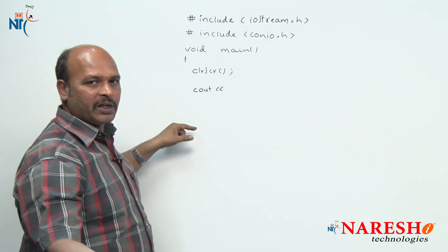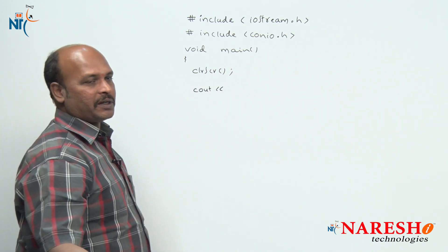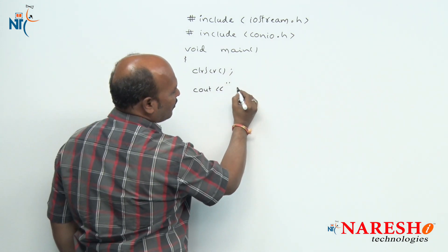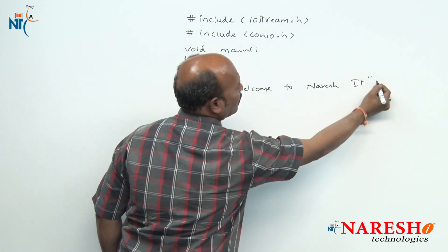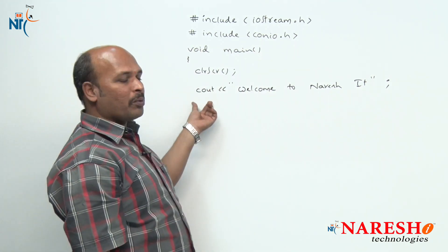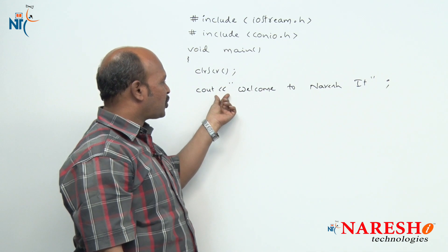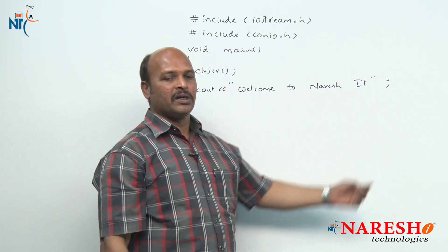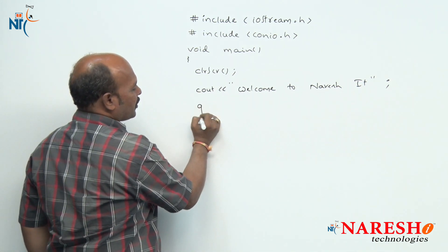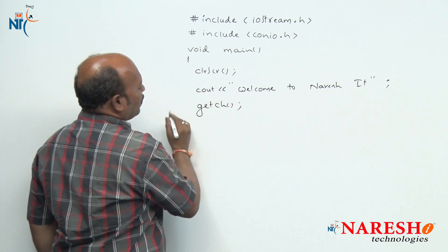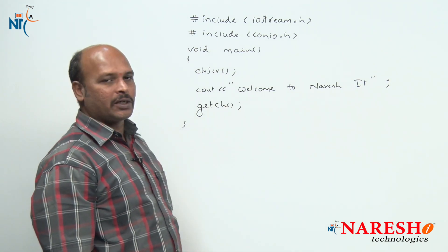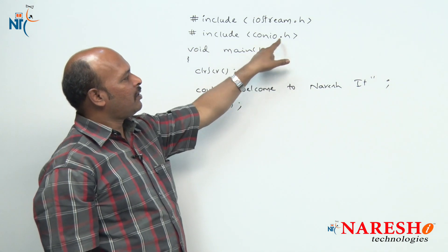Cout is the object name and '<<' is called the insertion operator. After that, the text you want to print goes here — for example, 'Welcome to Naresh IT' — then close double quotations and semicolon. Next I am going to use the getch function. With getch we can watch the output directly without pressing Alt+F5. getch is a predefined function available in conio.h, and it is used to read a character from the keyboard.